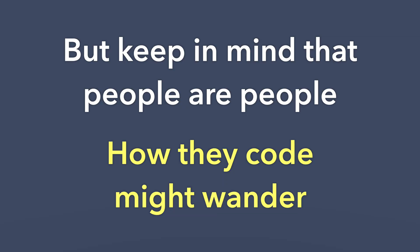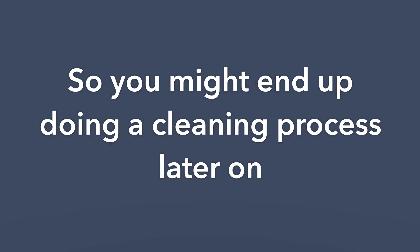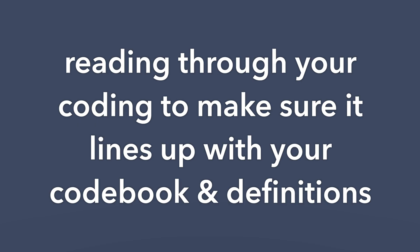Another question is: how often do I have to do inter-rater reliability? The answer is: it depends. You should at least go through the process at the beginning so that you can achieve some agreement on how you're coding. You can punctuate it throughout your project, or you could do your inter-rater reliability at the start and split everything else up from there. Keep in mind that people are people and coding might wander, so you might end up doing a cleaning process later — reading through your coding and making sure it lines up with your codebook. It's always a process, whether you're aiming for statistical agreement or going the consensus coding route.